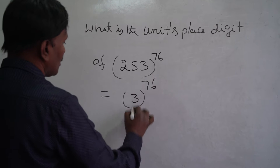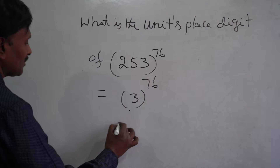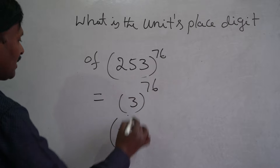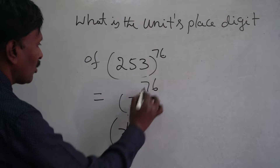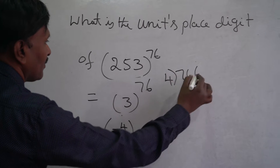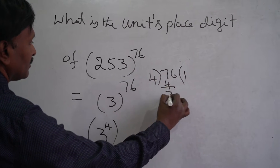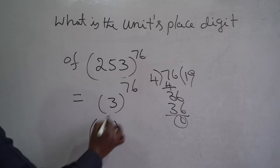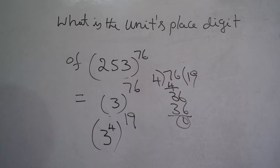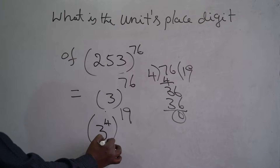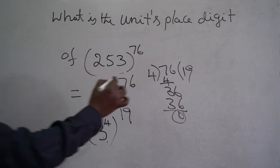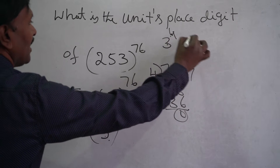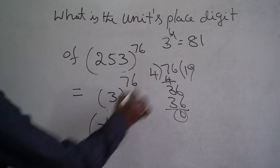So this can be written as 3 to the power of 4, whole to the power of 19 — since 76 divided by 4 gives 19. Now, what is 3 to the power of 4? 3 times 3 is 9, 9 times 3 is 27, 27 times 3 is 81. So 3 to the power of 4 equals 81.